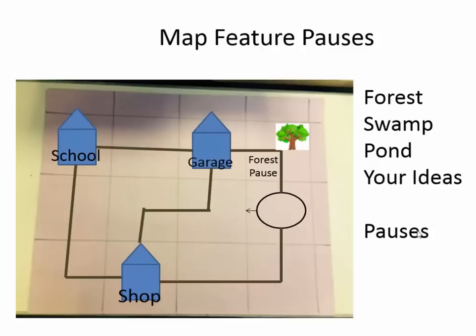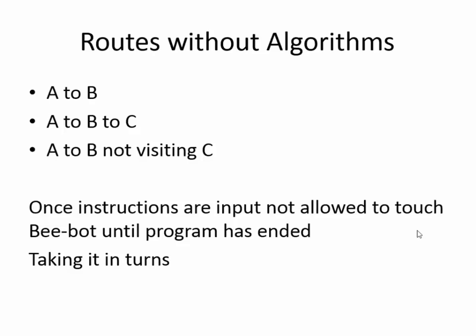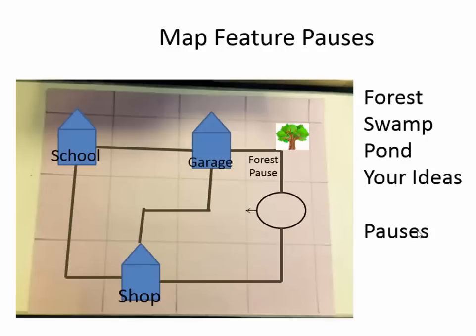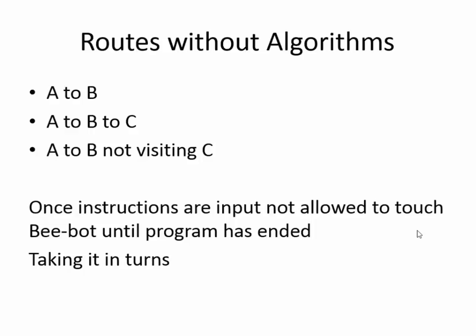Then we got the children to design routes for Bee-Bot to travel - could you get Bee-Bot to go from the shop to the garage, or from the shop to the school? Then it got a little more complex: you've got to visit these places but keep on the roads, or you've got to go from the garage to the shop but you're not allowed to go directly - you've got to go to the school first. The children had lots of fun designing those courses.